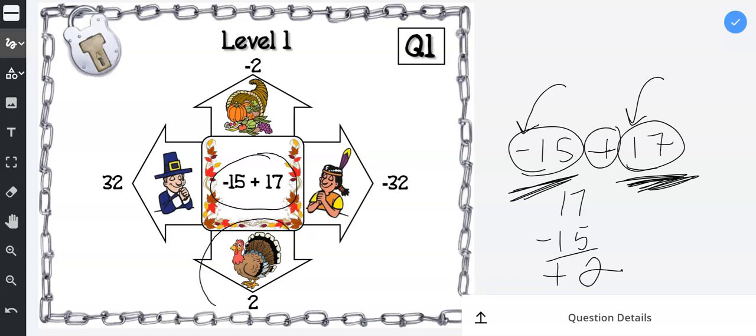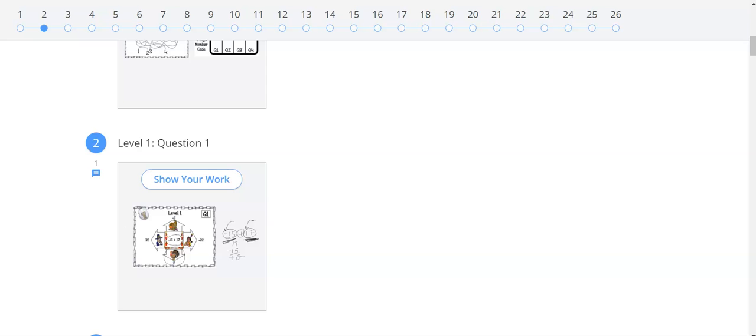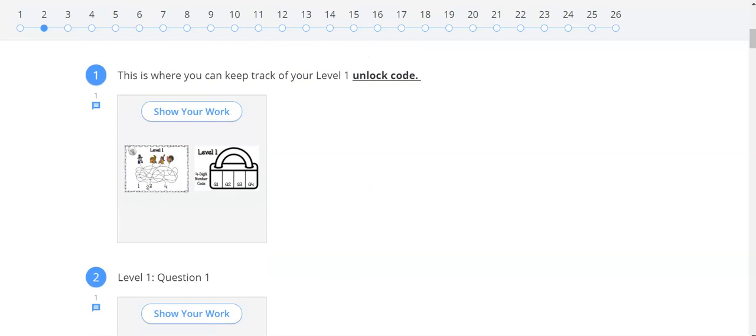So on this little answer sheet, the 2 is the turkey. So now I need to exit out of here and go to where I type in the code.